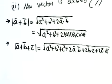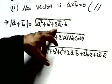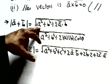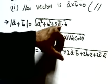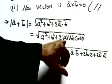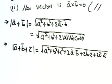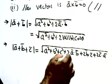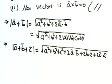How to find |a + b|: it equals √(a² + b² + 2a·b) = √(a² + b² + 2|a||b|cosθ). Similarly, |a + b + c| = √(a² + b² + c² + 2a·b + 2b·c + 2c·a). We must write a·b, not just ab, when dealing with vectors.